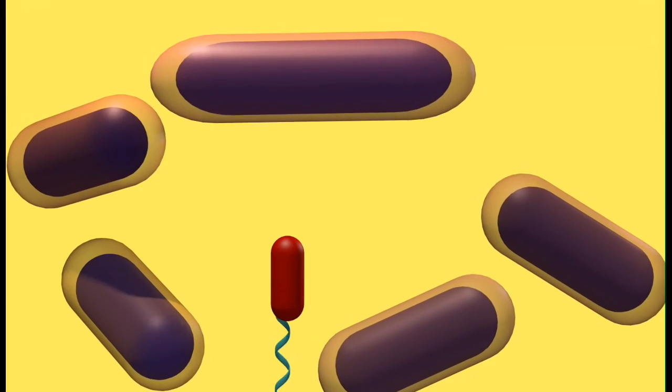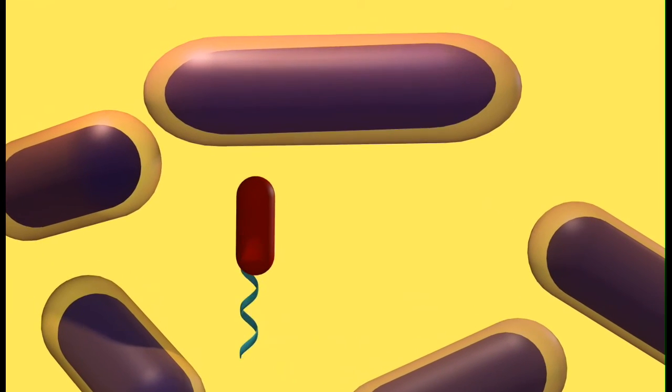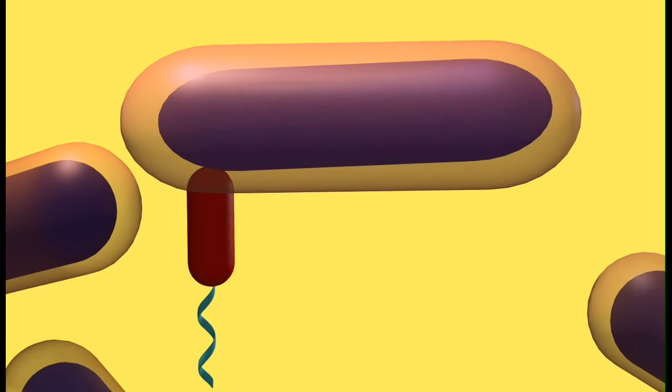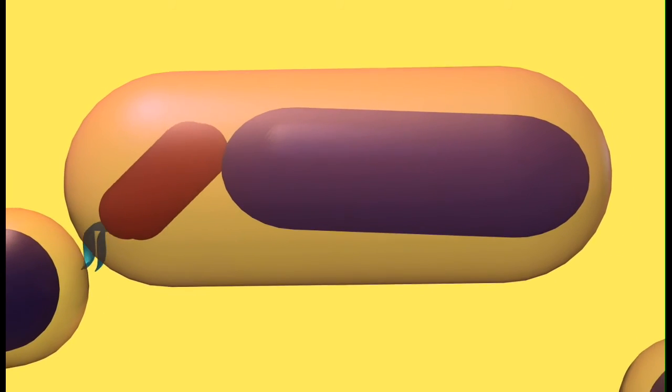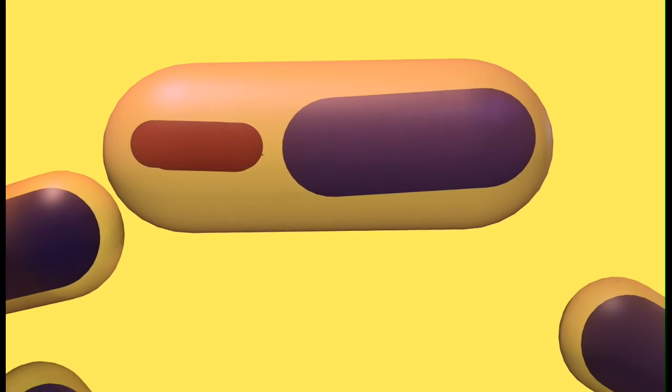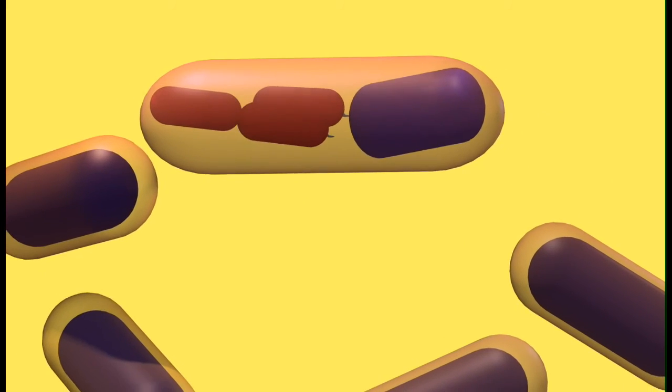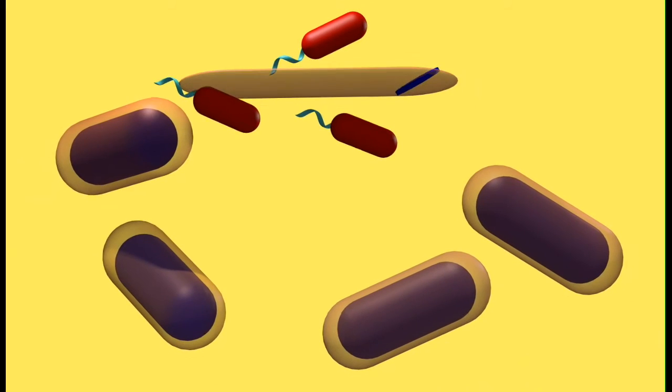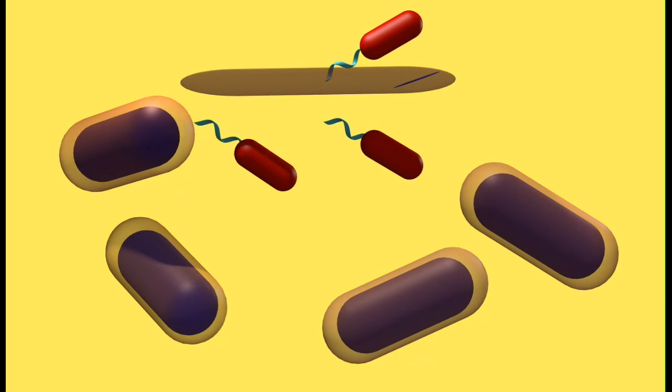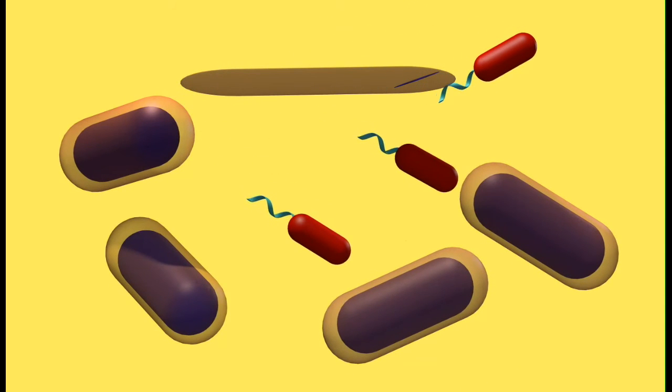It has been observed that more than one Bdellovibrio can invade the same prey organism at the same time. And one of the gram-negative bacteria on which it can prey, Aquaspirillum, forms biofilms, so that once the daughter cells are released, they can readily encounter other potential prey organisms.